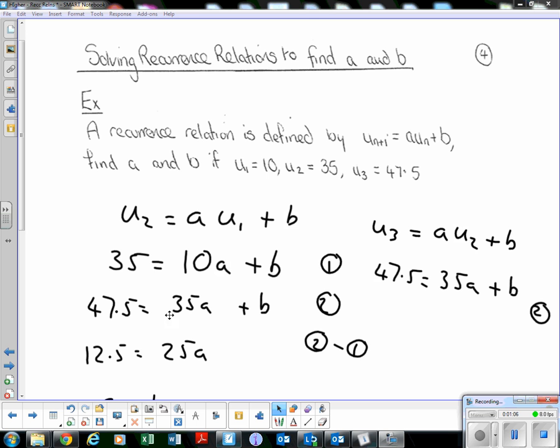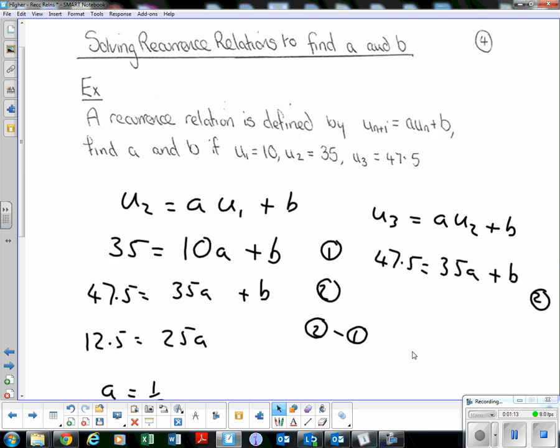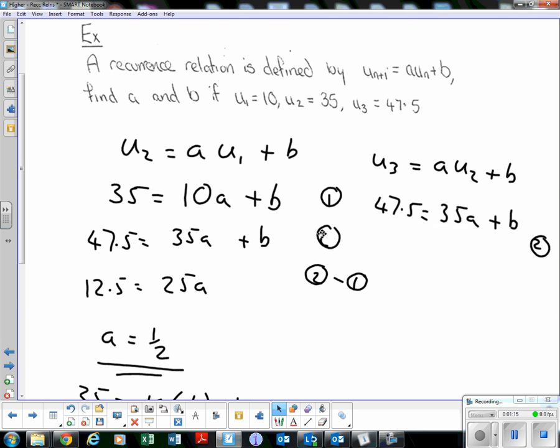What we have here is a pair of simultaneous equations in a and b. As always with simultaneous equations, we will label them equation 1 and equation 2. The coefficient of b is already equal, so we don't need to scale the equations. We don't need to do any doubling or tripling to make the coefficients equal.